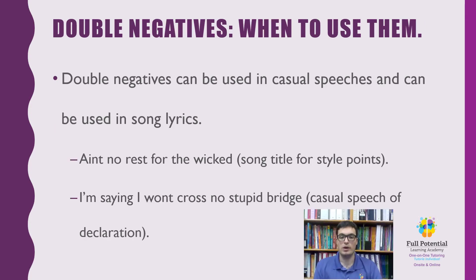Double negatives — when you can use them. You can use double negatives in casual speech between close colleagues and friends. You can use them in casual conversation when the rules of grammar can bend a little, so you can convey meaning without worrying about conveying the clear and total meaning. For example, 'I won't cross no snake and bridge' — when you say that, you're implying you won't cross a bridge. If you were writing that down, it's confusing, but if you're saying it, people can generally get the meaning without having to translate too much.